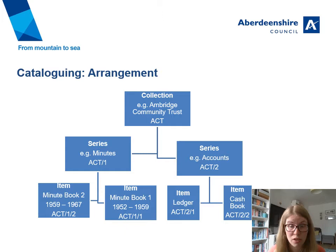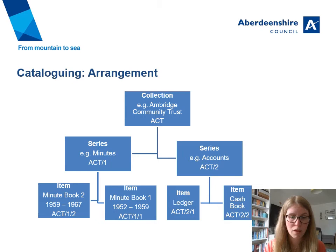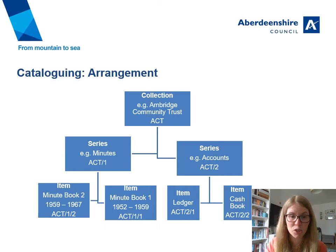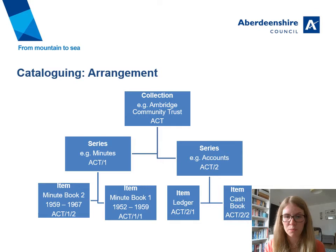Archive collections are arranged hierarchically to reflect the relationships between different parts of the collection. To explain the hierarchy structure: at the top you've got the collection, which can be broken down into series — for example, minutes and accounts. Underneath the minutes series there are the actual items, which are the minute books, and there are two minute books in this series. In the accounts series there's a ledger and a cash book. So underneath the collection there are two series, and in each series there are items — that's the hierarchical structure.